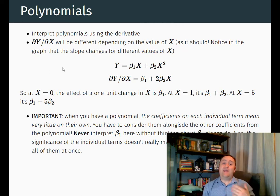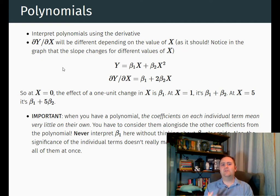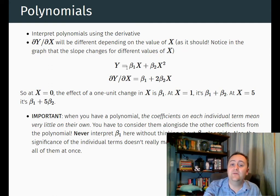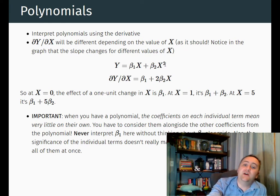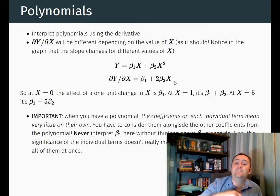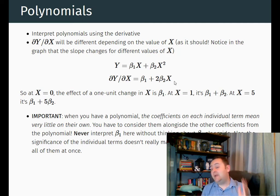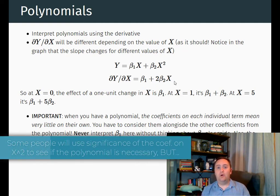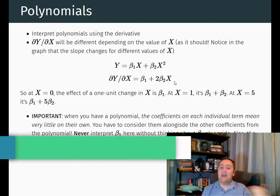How do we interpret a regression with a polynomial term? We interpret it in terms of a one unit increase, which is a bit more difficult because we have multiple variables. One easy way is to use the derivative. If you write out the equation for your regression and take the derivative with respect to x, the result is the effect of a one unit increase in x. So if we have beta 1 times x plus beta 2 times x squared, the derivative gives us beta 1 plus 2 times beta 2 times x. The individual coefficients by themselves mean very little with a polynomial term — you want to avoid interpreting them on their own. It doesn't particularly matter if they're significant or what their value is individually; what matters is when you combine them, because that gives you the actual effect of x.